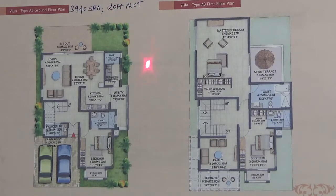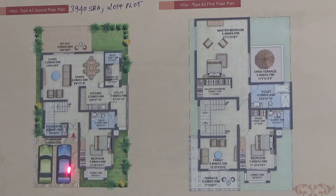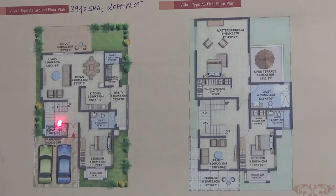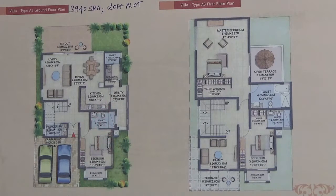This is the ground floor plan of the A3 type villa. When you enter, you have two car parks. There is a foyer here. On the left you have a powder room, and on the right you have a guest bedroom with an attached bathroom and toilet. This is the staircase to go to the first floor.